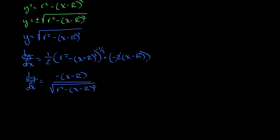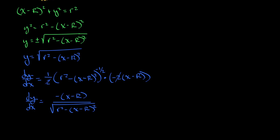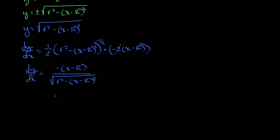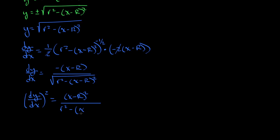Before we throw this back into our little piece of arc length, maybe it would be a good idea to square it — that might save us some writing time and make things a little neater. Squaring the derivative: in the numerator we get (x minus R)², and in the denominator we lose the radical, so we just have r² minus (x minus R)². That's our derivative squared.